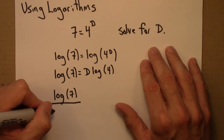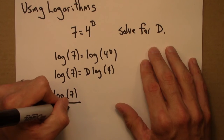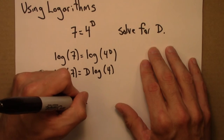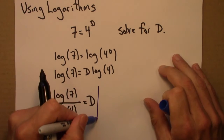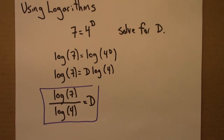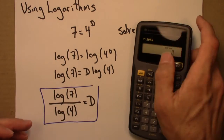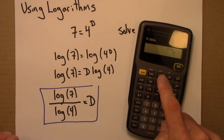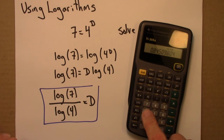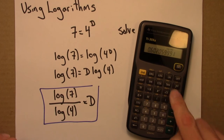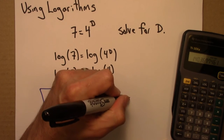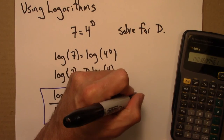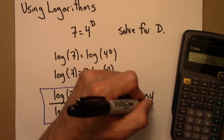log 7 over log 4 equals d. So that's the answer, and if I wanted to get an approximate number, I would use a calculator: 7 log divided by 4 log equals, and this gives me a d of approximately 1.404.